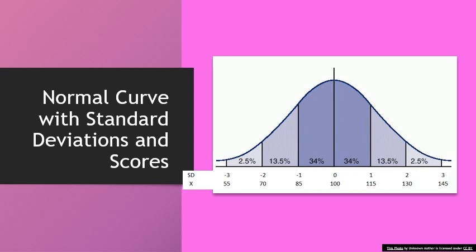Let's look at IQ scores as an example. One popular IQ test uses a mean of 100. I write 100 right below the zero standard deviation mark. The standard deviation on this test is 15, so to get to SD equals 1, I add 15 points. Going from 100, one standard deviation gives 115, two gives 130, and three gives 145. Going backwards, minus one SD is 85, minus two is 70, and minus three is 55.